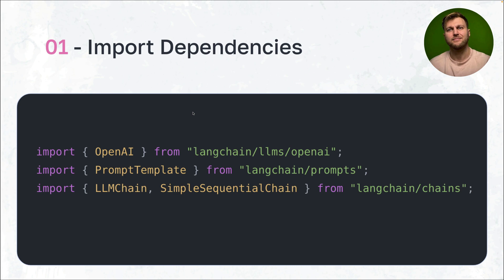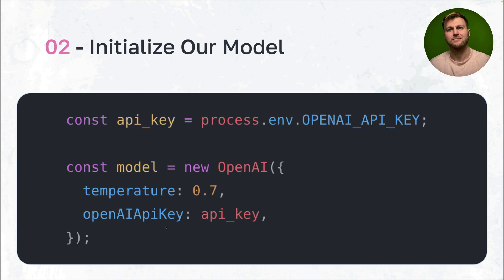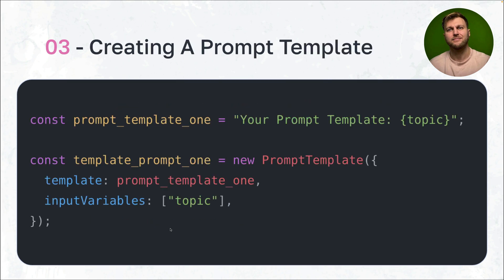Now let's look at the code example. The first thing we do is import our dependencies — OpenAI, PromptTemplate, LLMChain, and SimpleSequenceChain all come from the LangChain npm package. Next, we set and initiate which LLM we're using. In our case we're using OpenAI, so we use the new keyword and provide the temperature and our OpenAI API key.